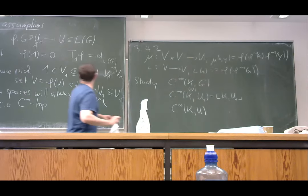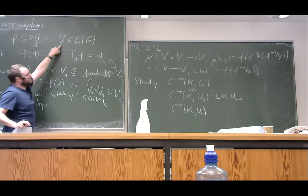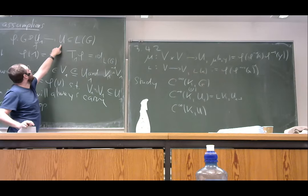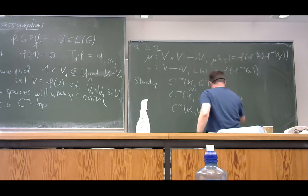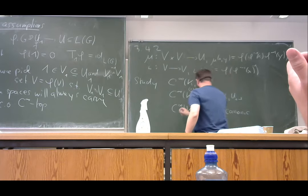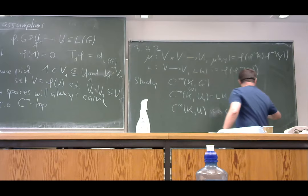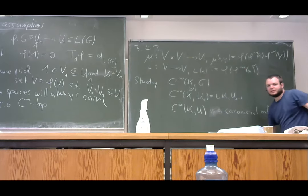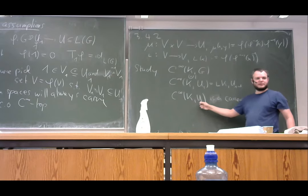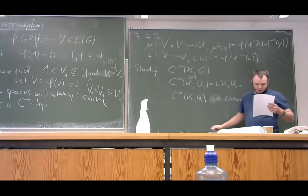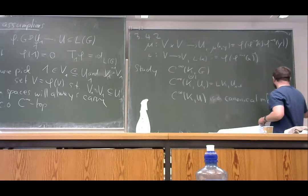We know that C∞(K, U₁) and the corresponding one, C∞(K, φ(U₁)), give us canonical manifolds — specifically, the second one is a canonical manifold. I'm using here that mapping from a compact manifold to an open subset of a locally convex space gives a canonical manifold structure, as proved in exercise 2.3.2. This basically uses the proof of the exponential law.